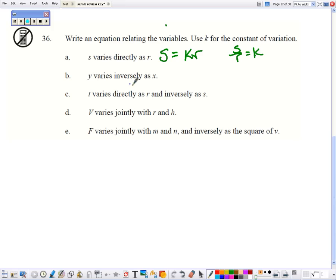For varies inversely, y equals k divided by x. Or again, you can isolate the k.